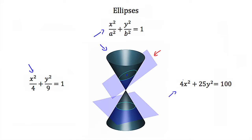We can tell that this is an ellipse because, like a circle, both the x-squared and y-squared terms are added together. We can tell it is not a circle, though, because the coefficients on these two terms are different.